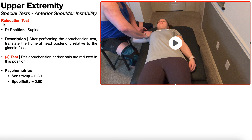Concerning these two tests: if the apprehension test is negative, there is no need to do the relocation test. The relocation test is an easing test, so if there is no apprehension or pain at the end of the apprehension test, there is nothing to ease. However, if the apprehension test is positive, you proceed to the relocation test to try to ease those symptoms. If the relocation test is also positive, in most situations you can conclude the patient may have anterior shoulder instability.